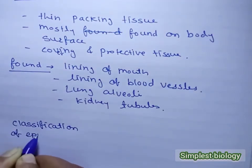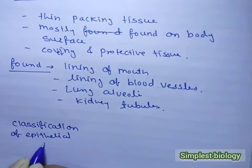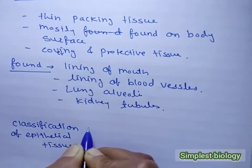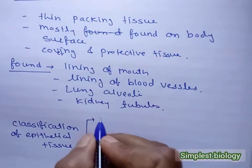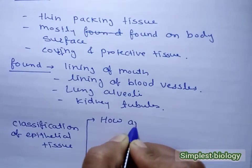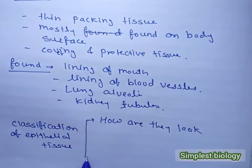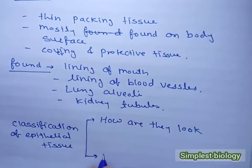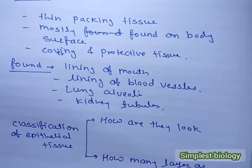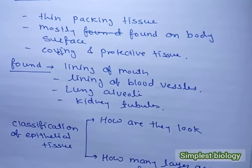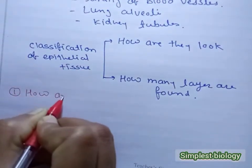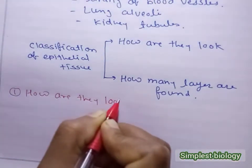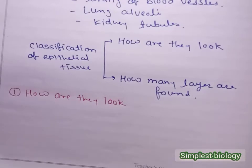Now we see the classification of epithelial tissue. Epithelial tissues are divided on two bases: the first is how they look — their shape or appearance — and the second is how many layers are found.